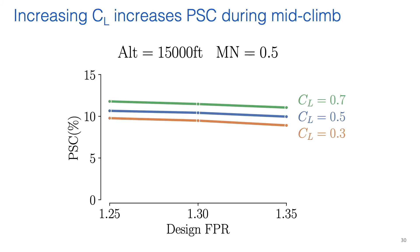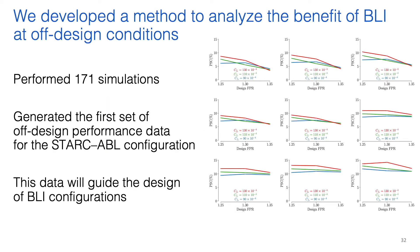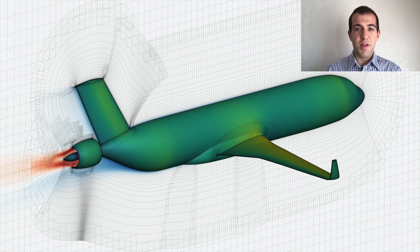We also studied the effect of changing lift coefficient at an altitude of 15,000 feet and a Mach number of 0.5. These results show that PSC values increase uniformly with increasing lift coefficient, similar to the trend observed previously. This creates an interesting trade-off, suggesting that adjusting the lift distribution might increase the benefit from BLI. To wrap up: in this work we developed a method to analyze the benefit of BLI at off-design conditions, performed 171 simulations to quantify the benefit to the STARC-ABL concept at 9 flight conditions, and generated the first set of off-design performance data for this configuration. These results will guide the design of BLI configurations in the future.